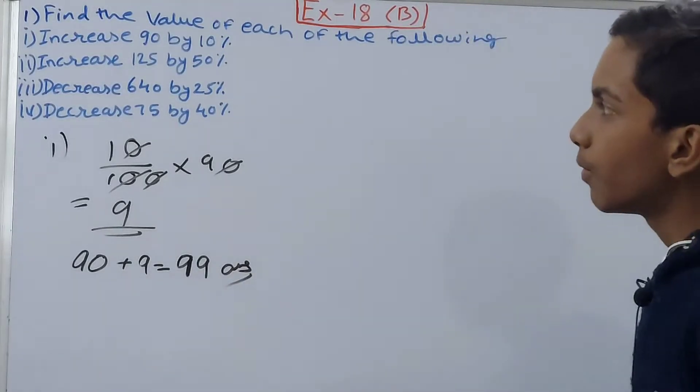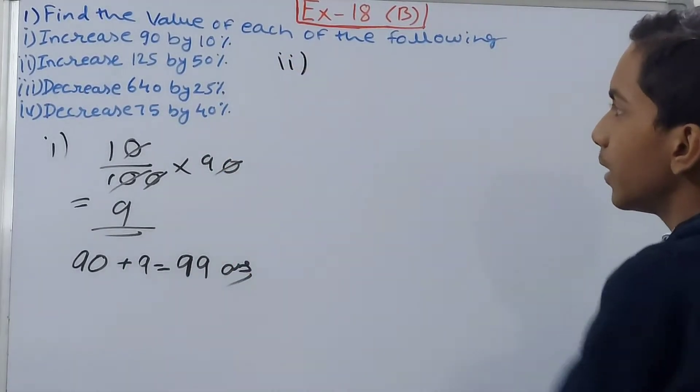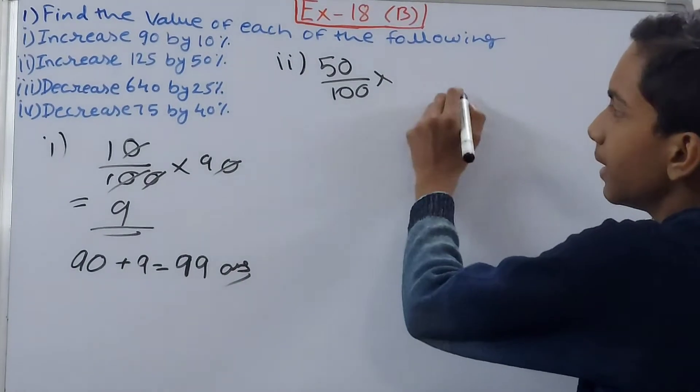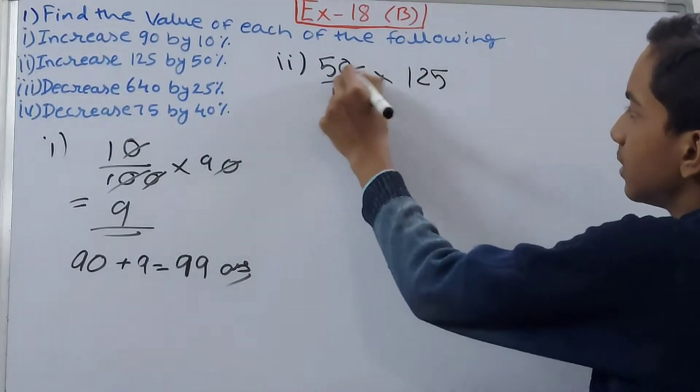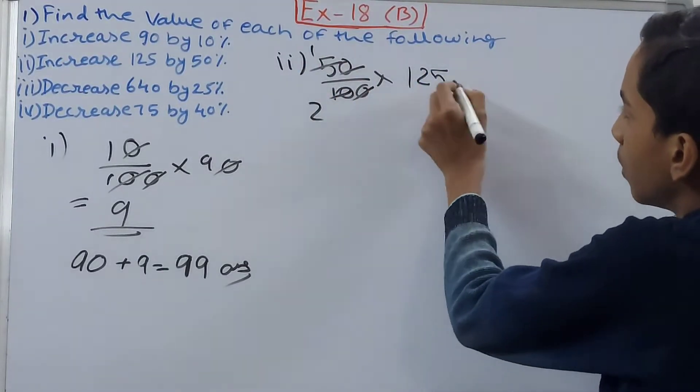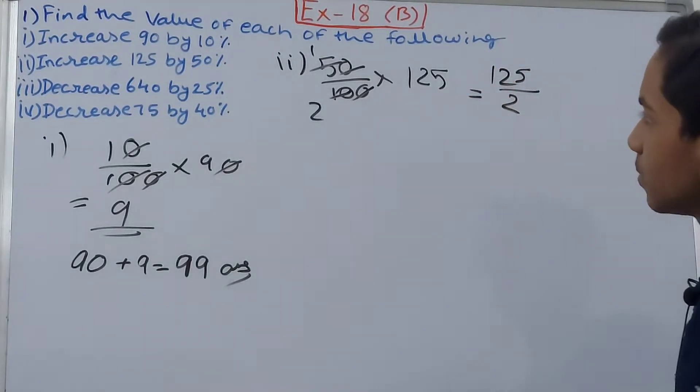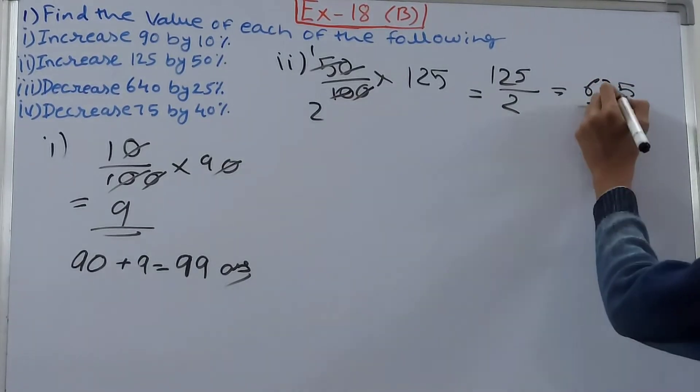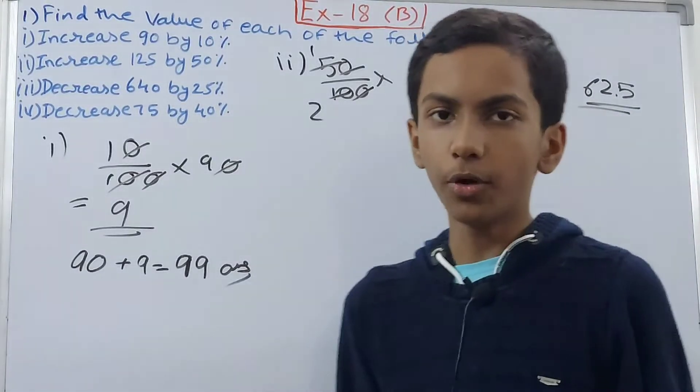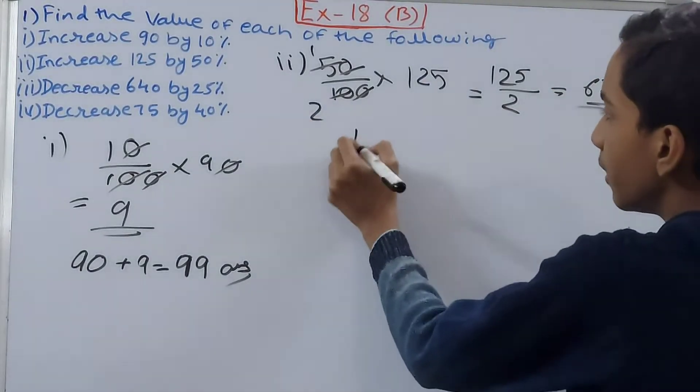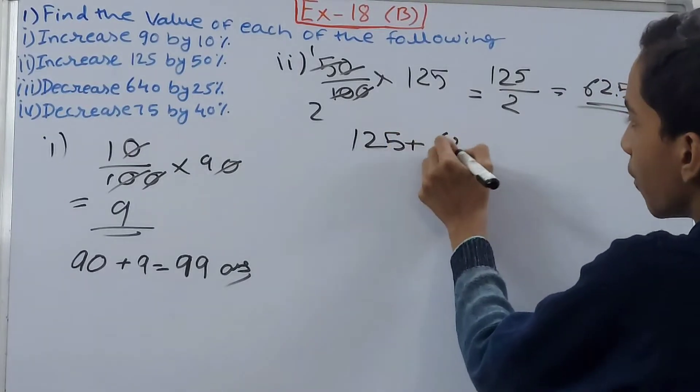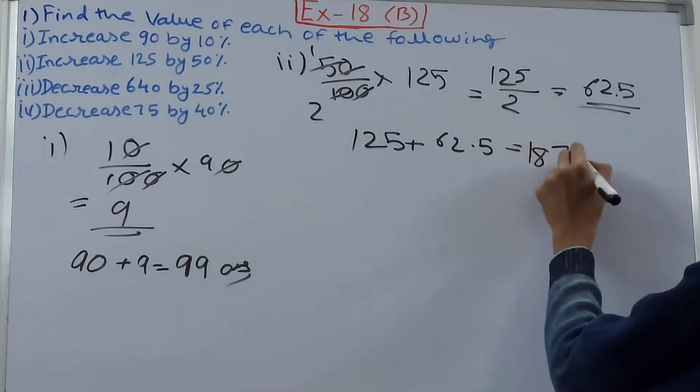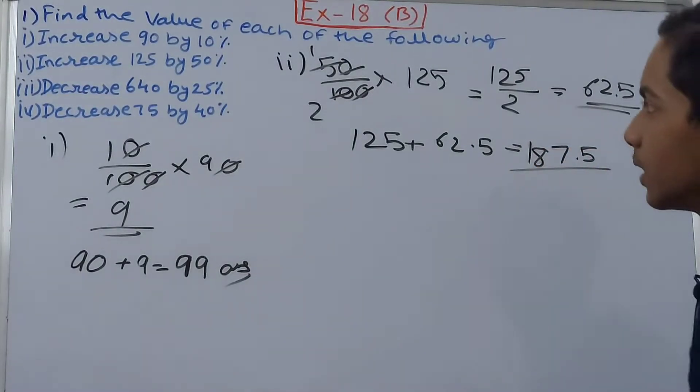Then next up, in the second part it says increase 125 by 50%. Again 50% of 125, so 50 into 125. Cancel this zero with zero, 1 and 2. So 125 upon 2, so this gives us 62.5. So this will be increased, this number will be increased by 62.5. Now add that, so 125 plus 62.5 gives us 187.5. So this is the increased value.